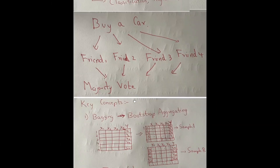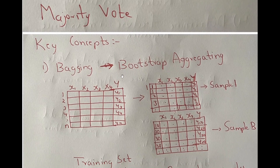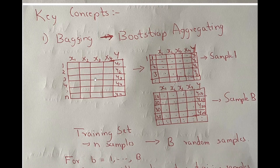Now what are the key concepts in random forest? The first key concept is bagging. Bagging stands for bootstrap aggregating. I have made another video on bagging and will put the link in the description. The key idea is that if you have a training dataset with N samples, some features, and a target, bagging creates what are called bagged samples.